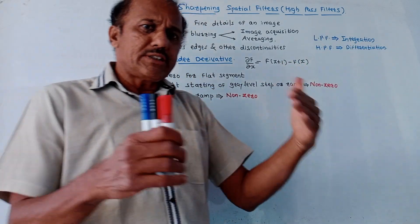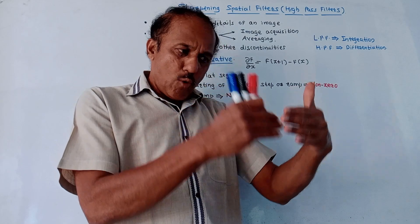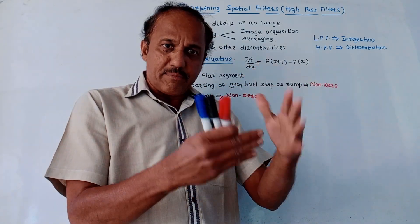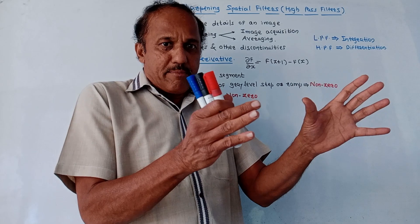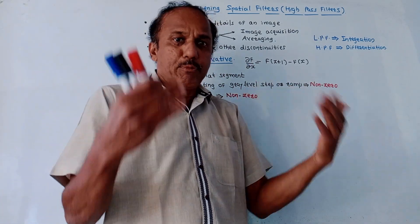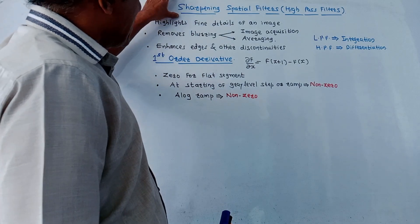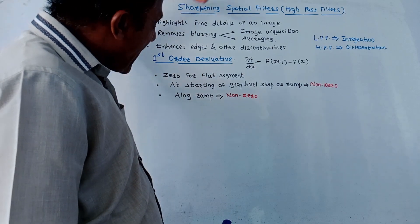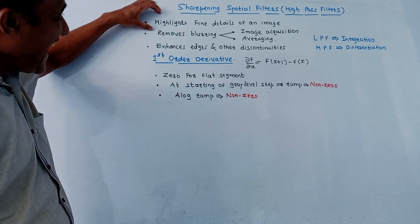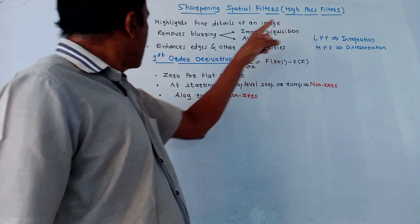Earlier we discussed low pass filters. Recall that a low pass filter is used for a smoothing effect, which means it produces a blurred image, required in many pre-processing applications. This is the opposite case — we want to sharpen an image. This technique basically highlights the fine details of an image.